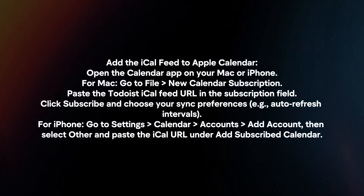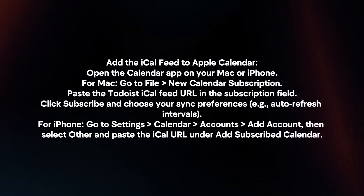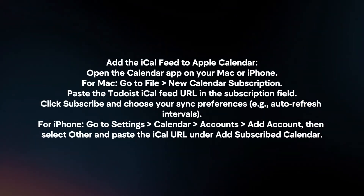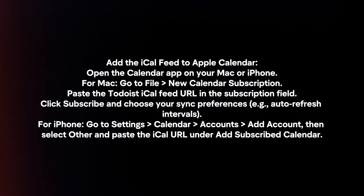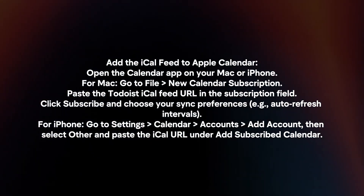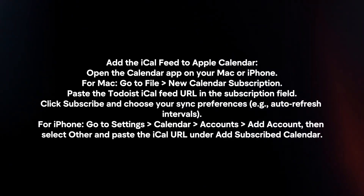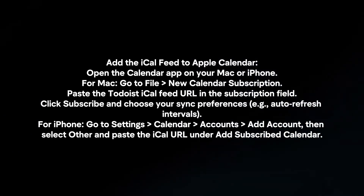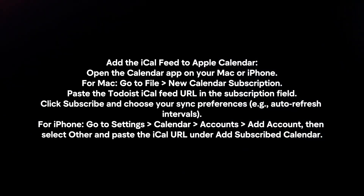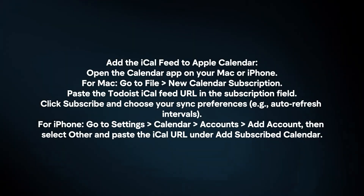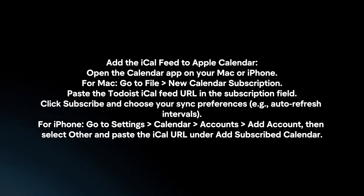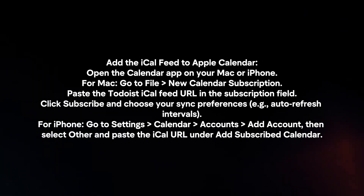Add the iCal Feed to Apple Calendar. Open the Calendar app on your Mac or iPhone. For Mac, go to File, then New Calendar Subscription. Paste the Todoist iCal Feed URL in the Subscription field, click Subscribe, and choose your sync preferences.